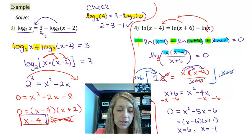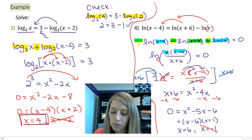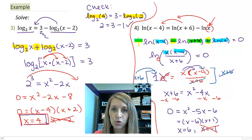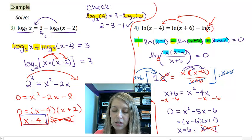Well, if I check my solutions, I know automatically that x equals negative 1 is not a solution because I cannot plug it into a natural log. Let me check x equals 6.